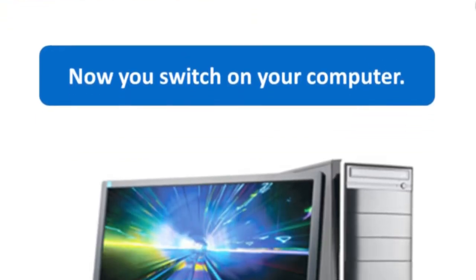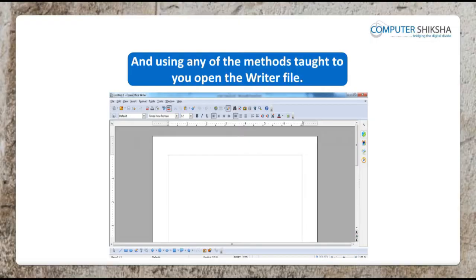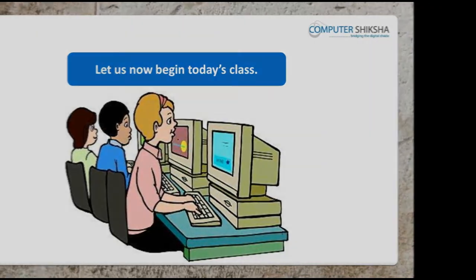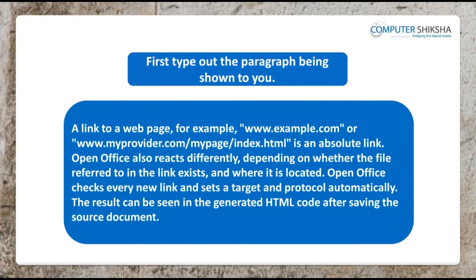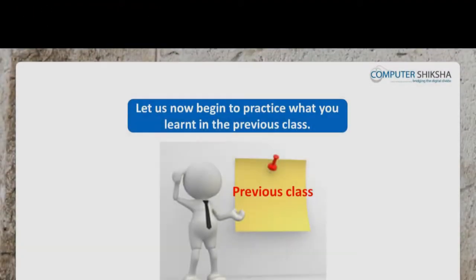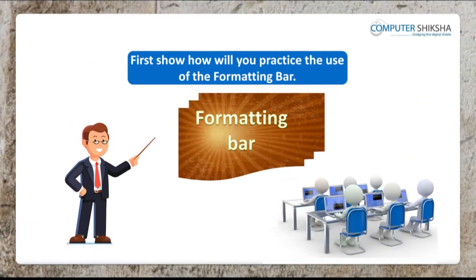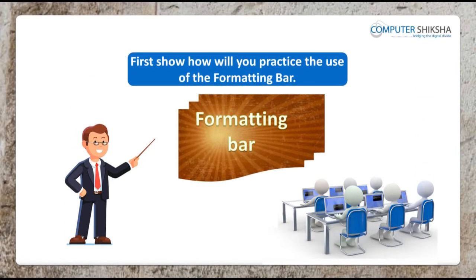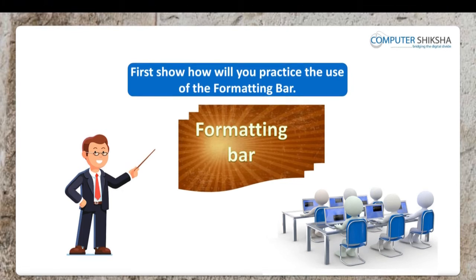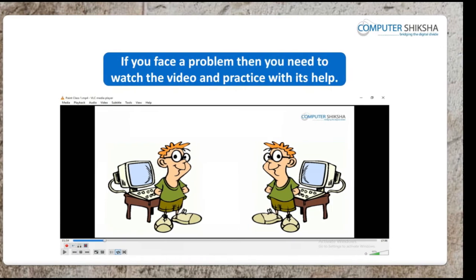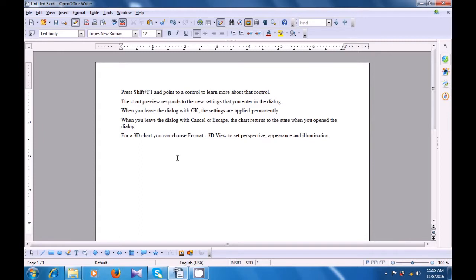Now all of you switch on your computers and then open the writer file. Let us now begin today's class. First, type out the paragraph being shown to you. Let us now begin to practice what you learnt in the previous class. Firstly, show how will you practice the use of the formatting bar. If you face a problem, then you need to watch the video and practice with its help. Taking the help of this video, let us now practice the use of the formatting bar.